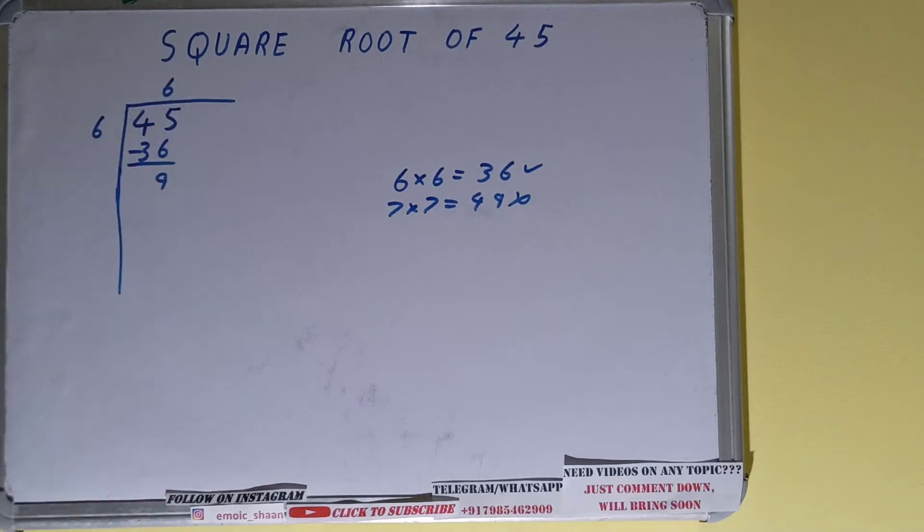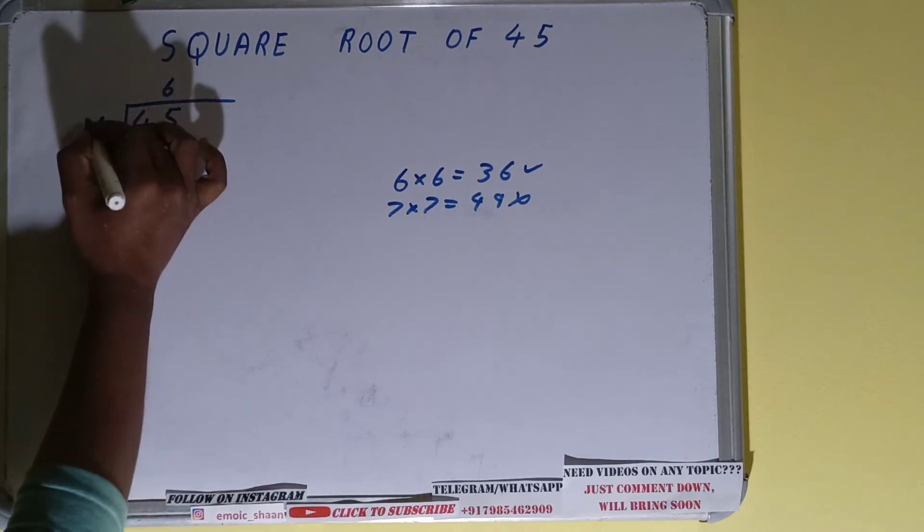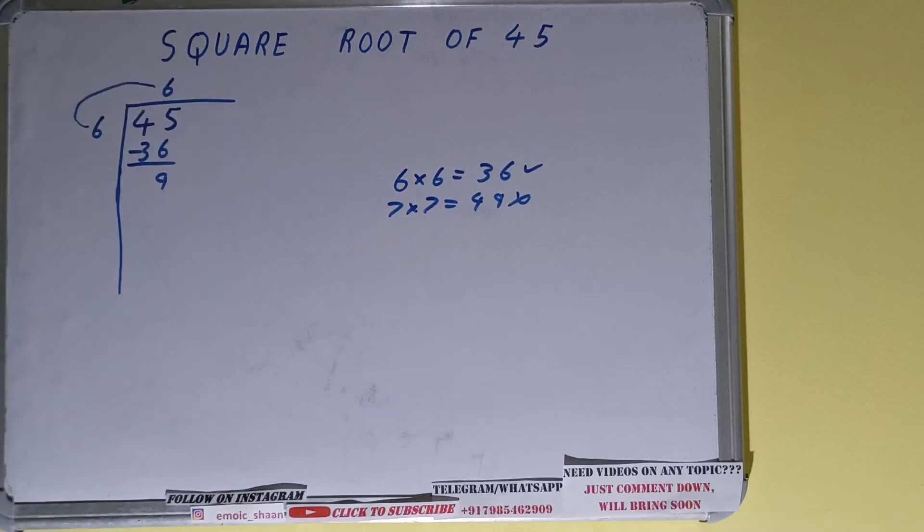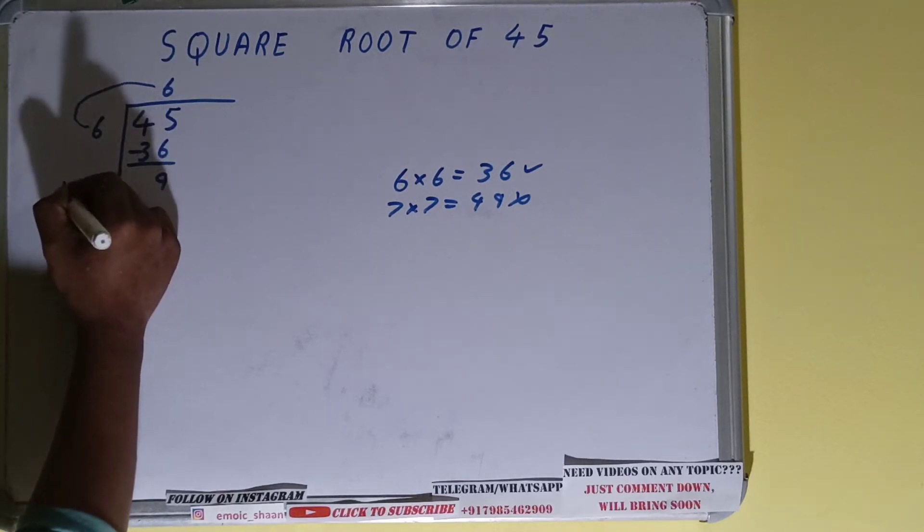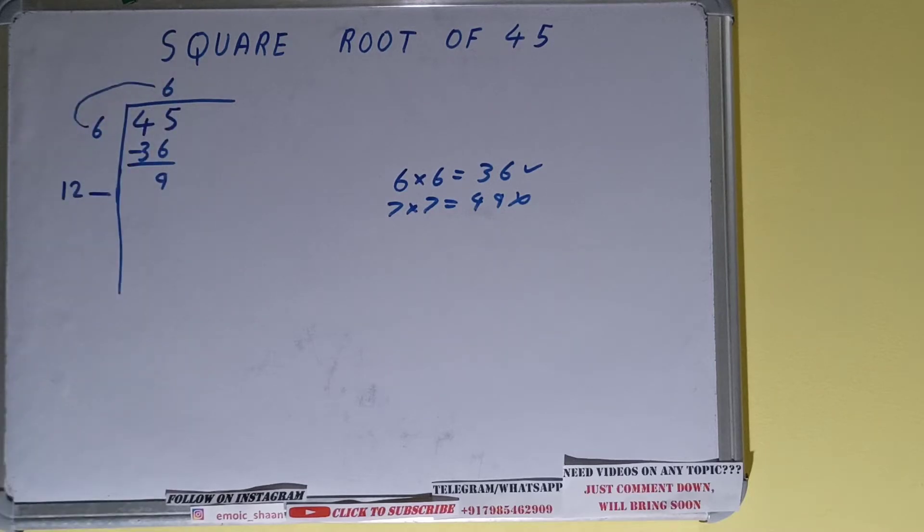Now the next thing what you need to do is with this divisor, add what you multiplied with. So we multiplied this 6 with 6, so add both. So it will be 12 and keep one digit extra.